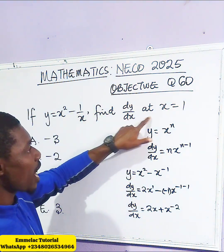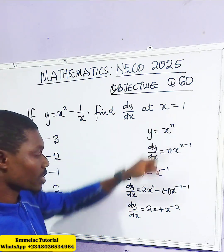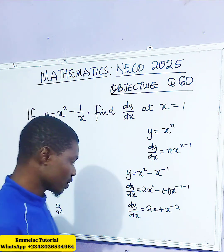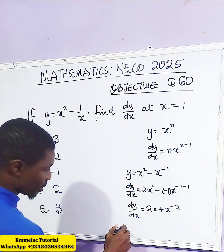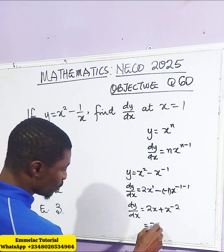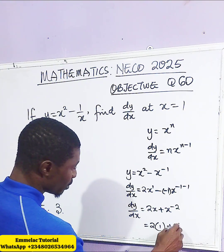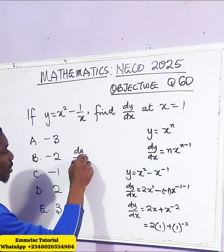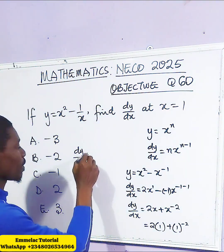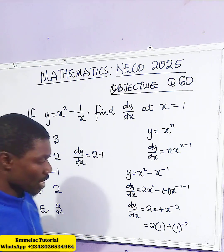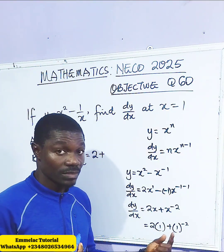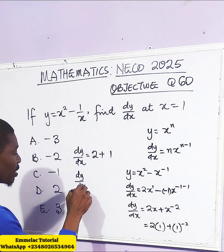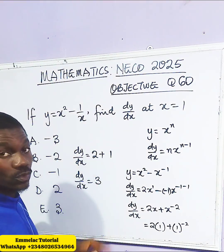At x equals 1, wherever we see x, we plug in 1. So we have 2 times 1, plus 1 raised to the power of negative 2. Now, 2 times 1 is 2, and 1 raised to the power of negative 2 is the same as 1. So dy/dx equals 2 plus 1, which gives us 3.